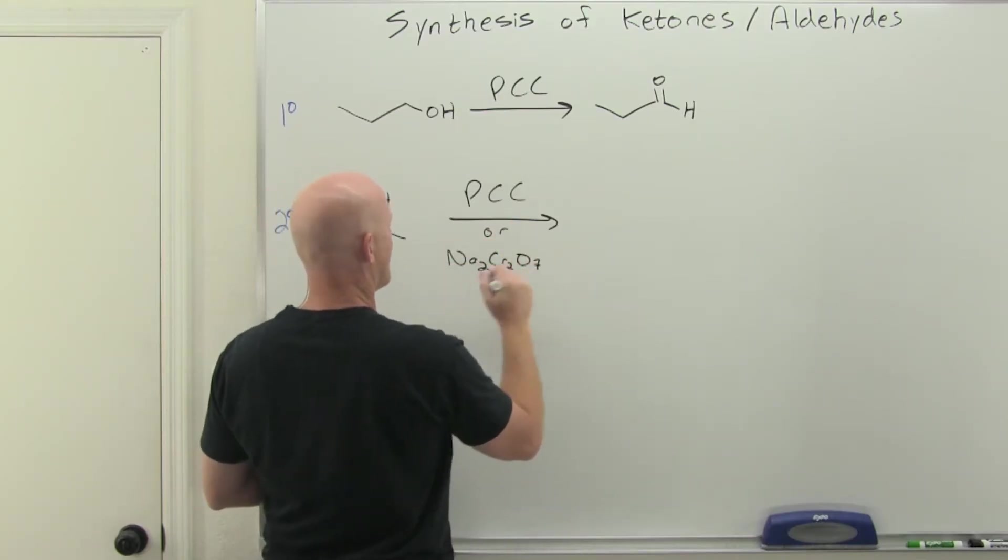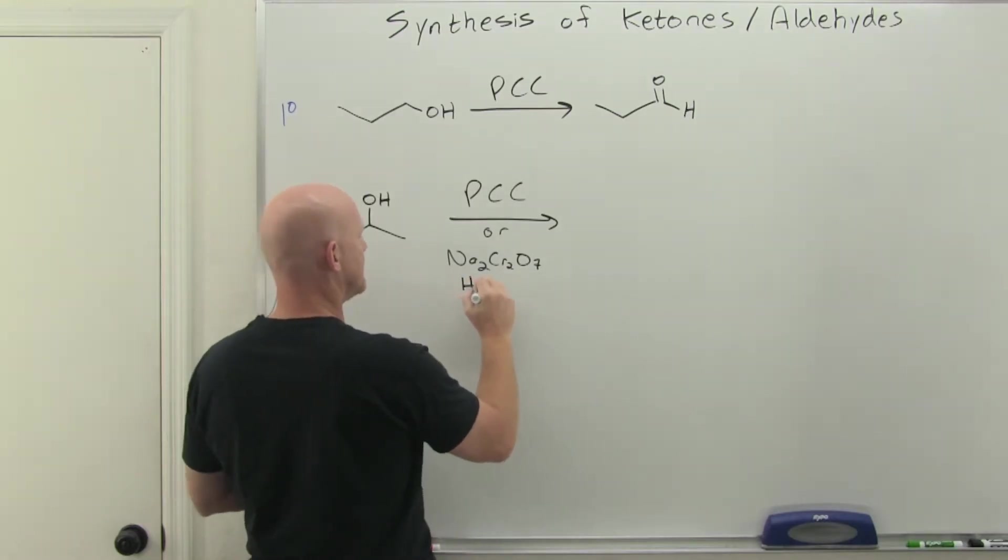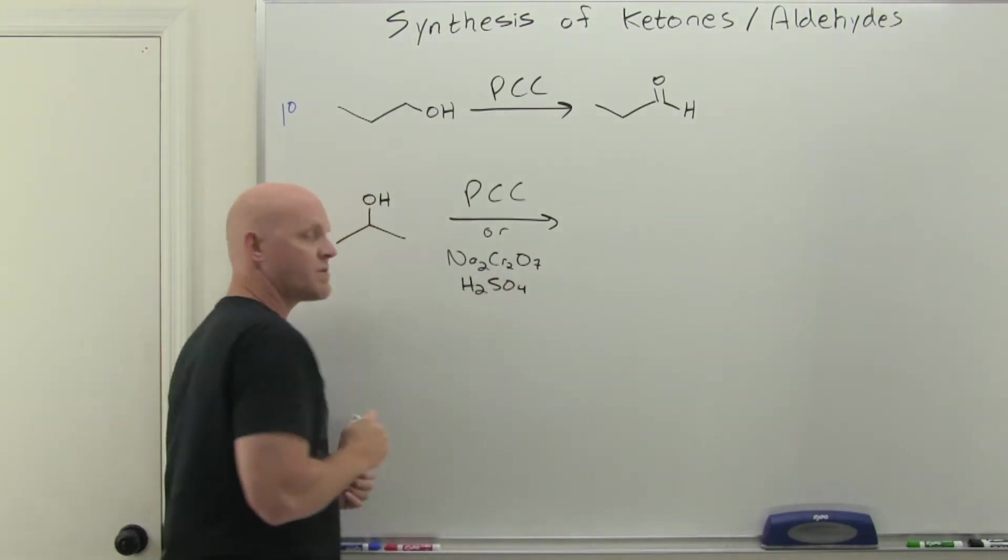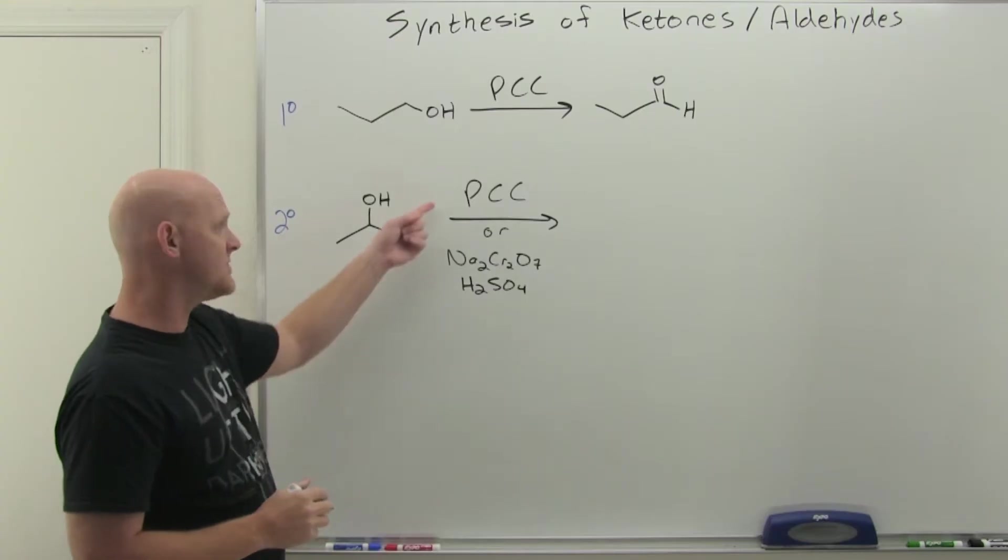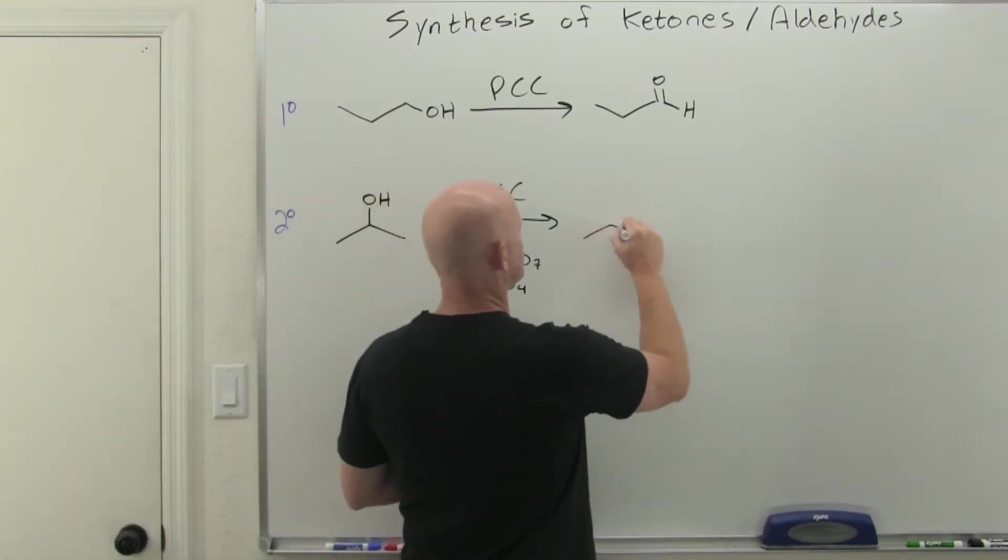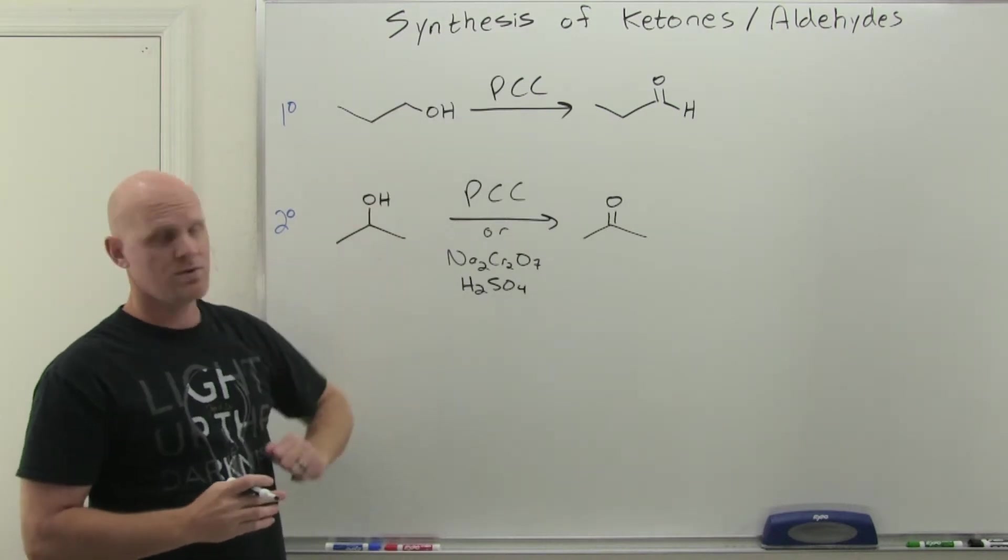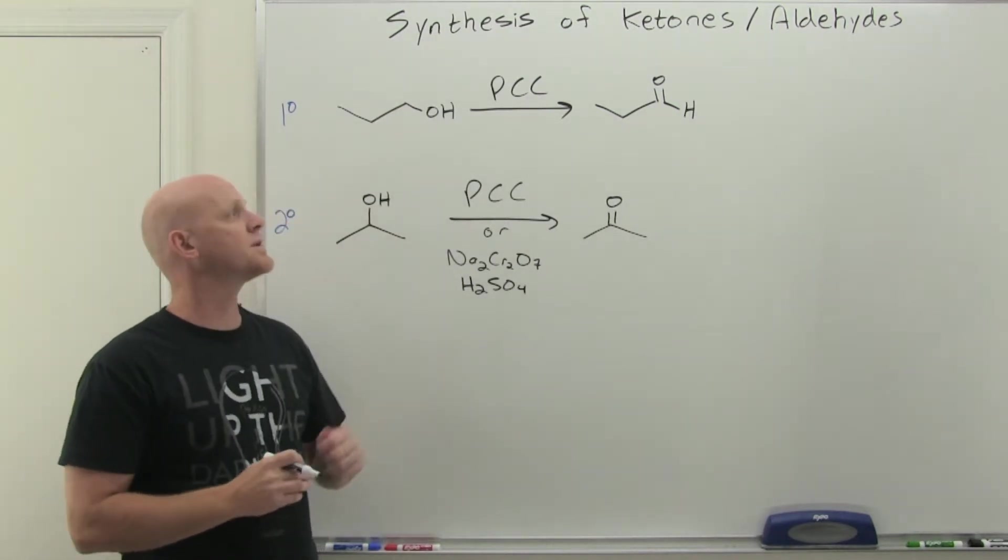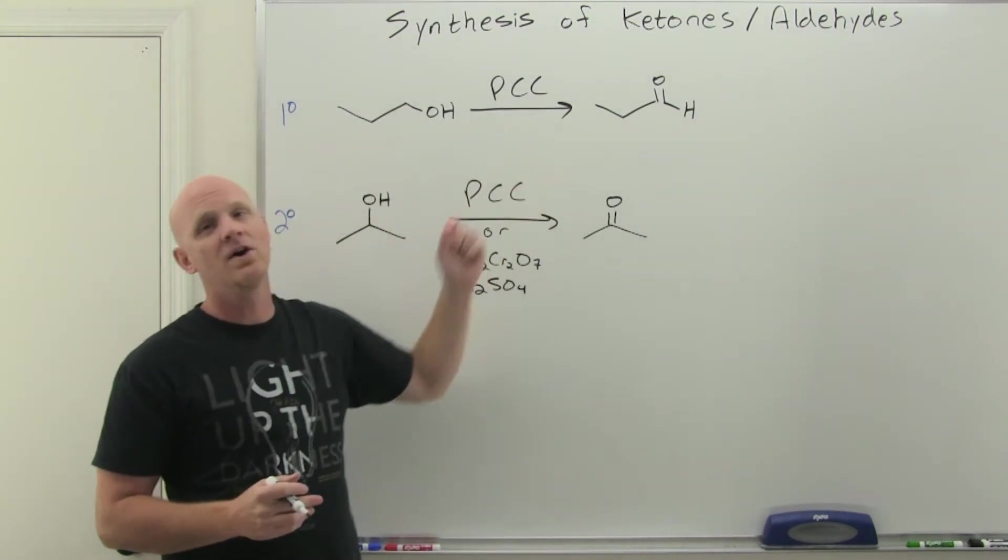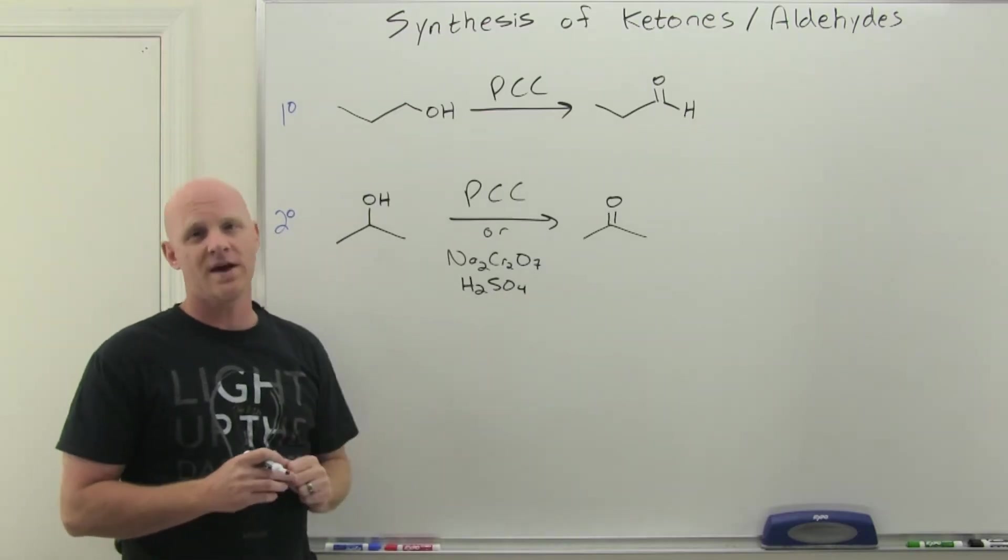So it doesn't really matter if you use PCC or chromic acid. You have a multitude of ways to draw chromic acid, the most common of which is probably sodium or potassium dichromate with a strong acid like sulfuric acid. But either way in this case, you oxidize it one step to a ketone. Just review ways we learned back in the alcohol chapter for turning a primary alcohol into an aldehyde or a secondary alcohol into a ketone.